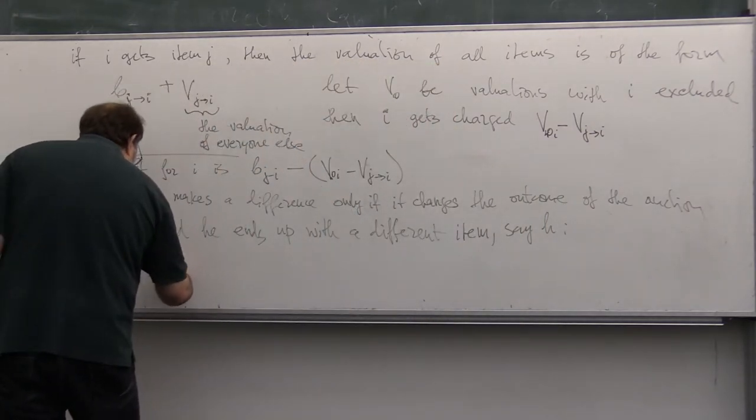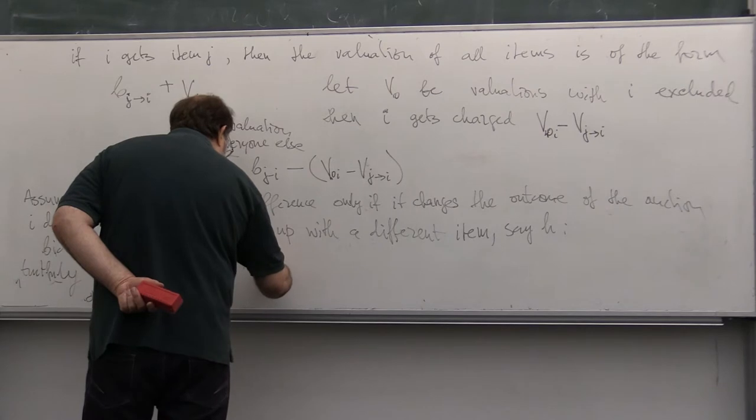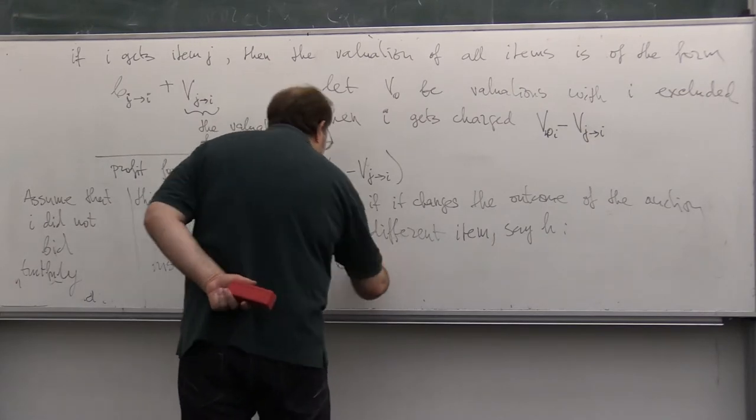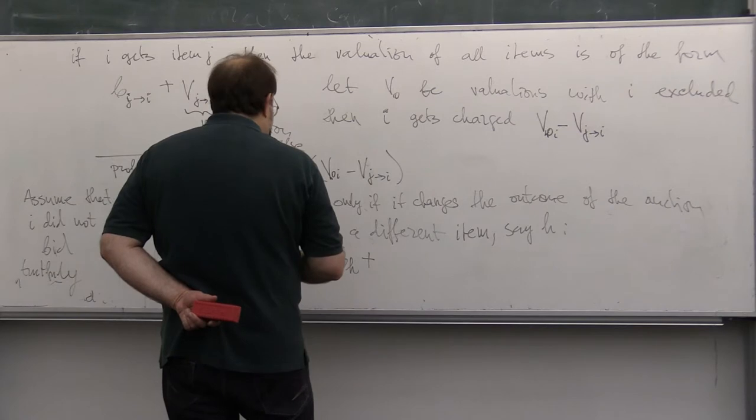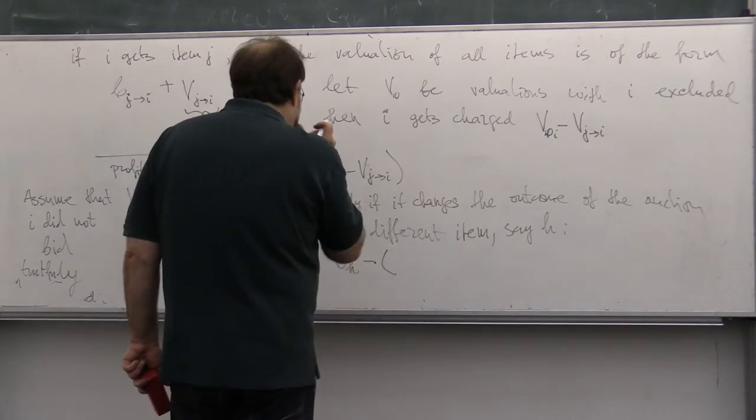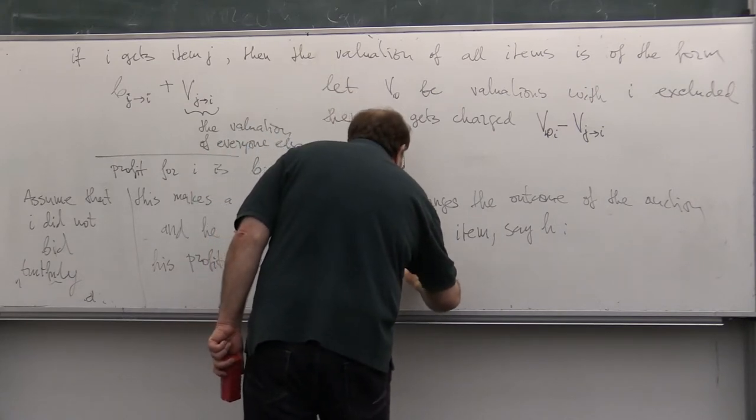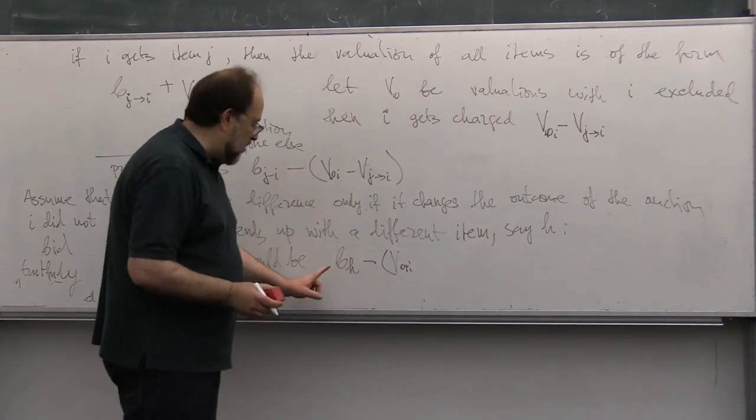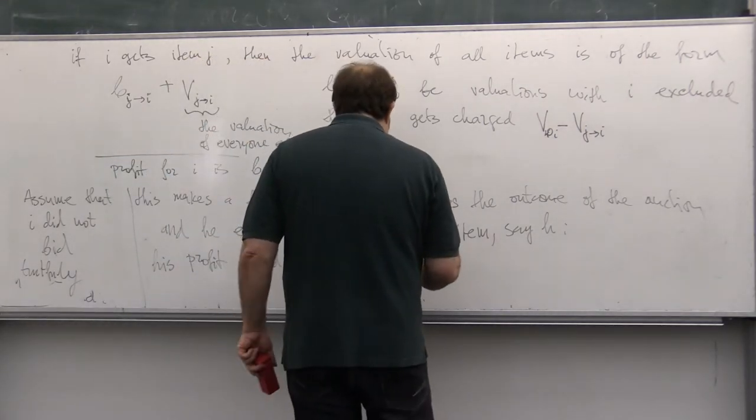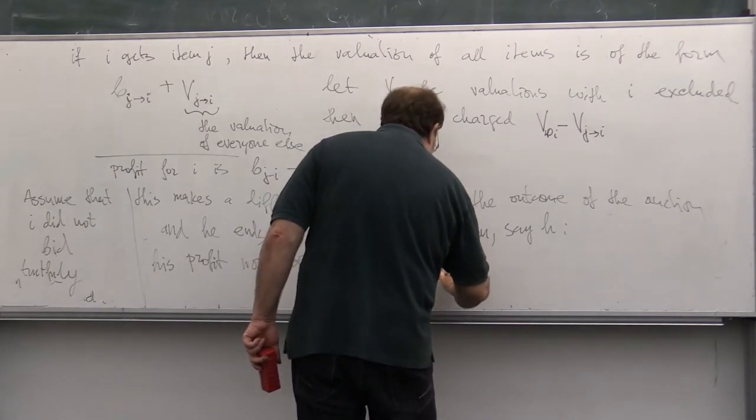His profit would be VH minus the price that he has to pay, which will be V out I, the same V out I, because only his valuation changed.